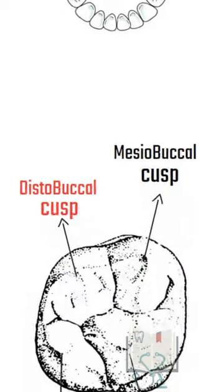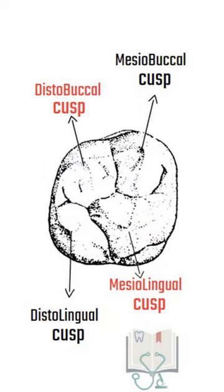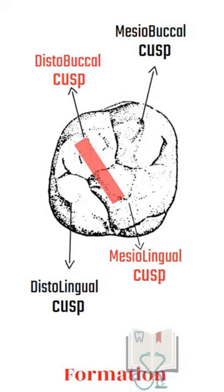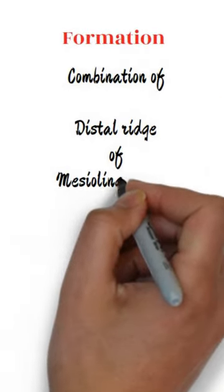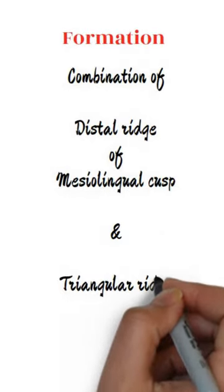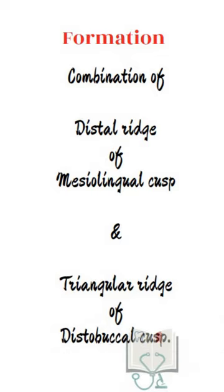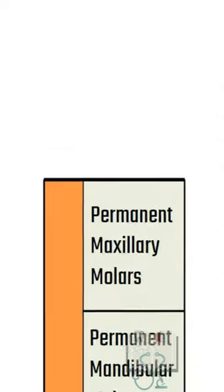It is located on the occlusal surface, running obliquely between the mesolingual cusp and the disto-buccal cusp. It is formed by the combination of the distal ridge of the mesolingual cusp and the triangular ridge of the disto-buccal cusp.